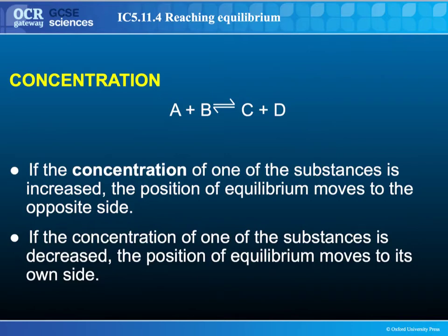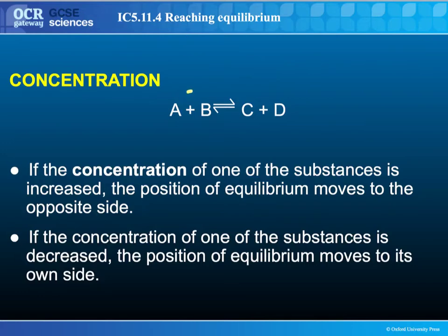Concentration is fairly straightforward — it's almost like a slide. Whichever side you've got the highest concentration of, the reaction will go the other way. So if you raise the concentration of A and B, you create a concentration gradient leading to the production of C and D. If the opposite is true and you increase the concentration of C and D, that creates a slide in the opposite direction, leading to the production of A and B. Raising the concentration moves the position of equilibrium to the opposite side of the reaction.